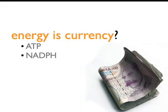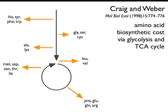But when you talk about cost, what is the currency? Is energy the currency of cost? For example, are savings in terms of ATP molecules and NADPH molecules expended in synthesis? Craig and Weber looked at synthesising amino acids in terms of glycolysis and the TCA cycle, where each amino acid is synthesised in a biosynthetic branch coming off either glycolysis or the TCA cycle. The cost of each amino acid can be measured in terms of the ATPs using the branching pathways, as well as the loss in ATPs not generated by sending the substrate through glycolysis and the TCA cycle.